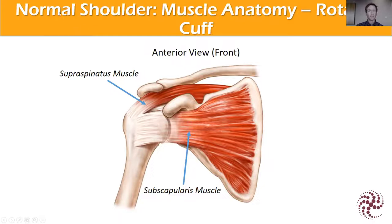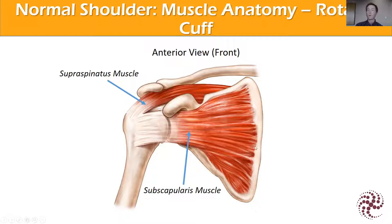Looking at the normal shoulder anatomy, specifically the rotator cuff — you can see the top supraspinatus muscle. That is the main rotator cuff tendon that causes the majority of rotator cuff symptoms and it's the one we treat most often surgically. The front rotator cuff muscle is the subscapularis. And then in the back, there's the infraspinatus and teres minor. Those four tendons make up the rotator cuff and lead to stability in the shoulder, allow us to lift our arm away from the body, hold up objects, play golf — all sorts of activities.